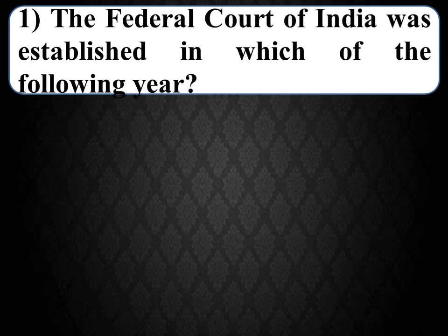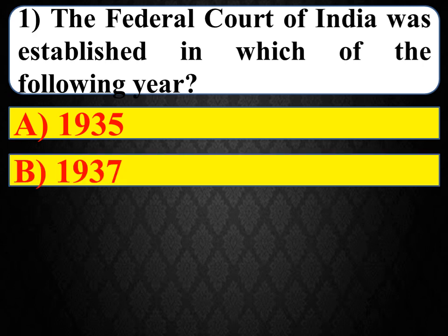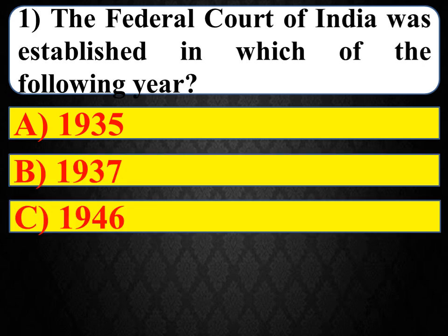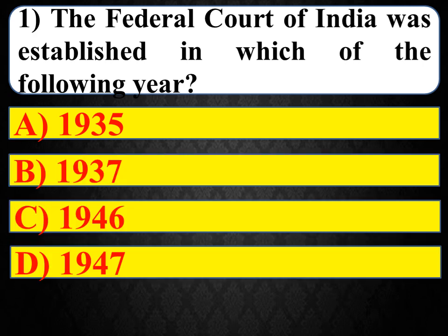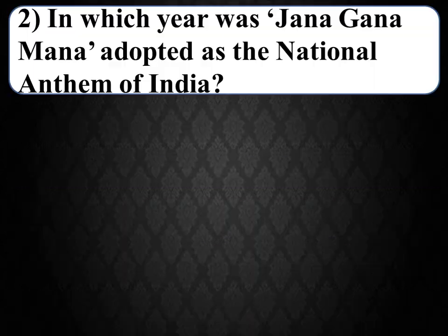First question: the Federal Court of India was established in which of the following years? Options are: 1935, 1937, 1946, 1947. The right answer is B — in the year 1937, the Federal Court of India was established.